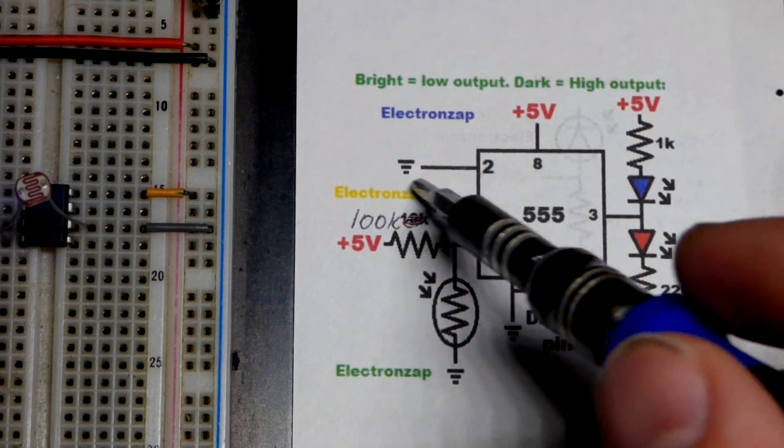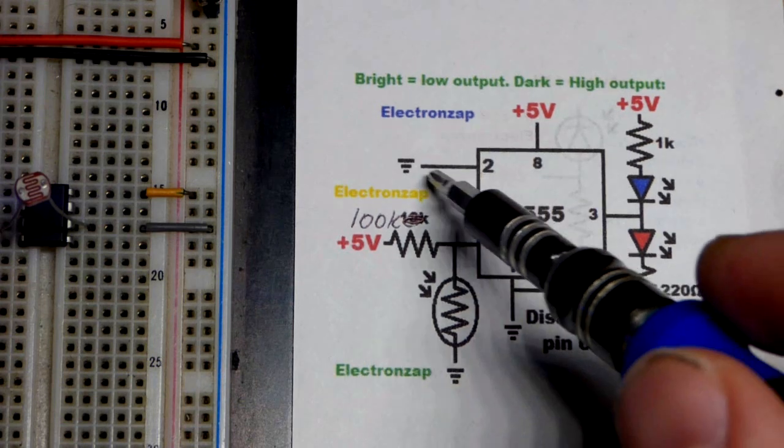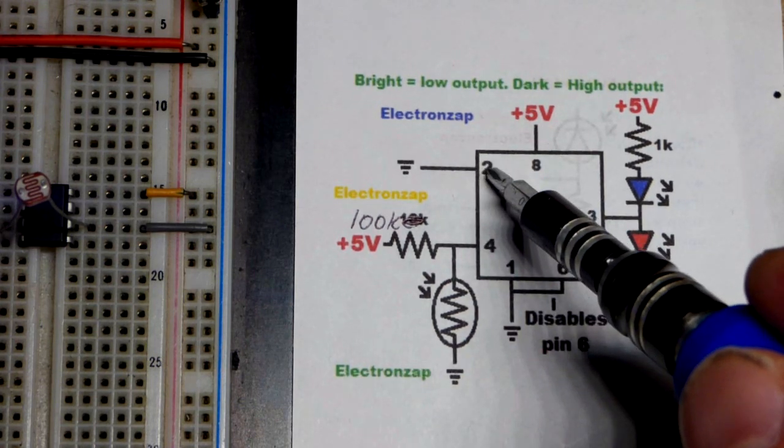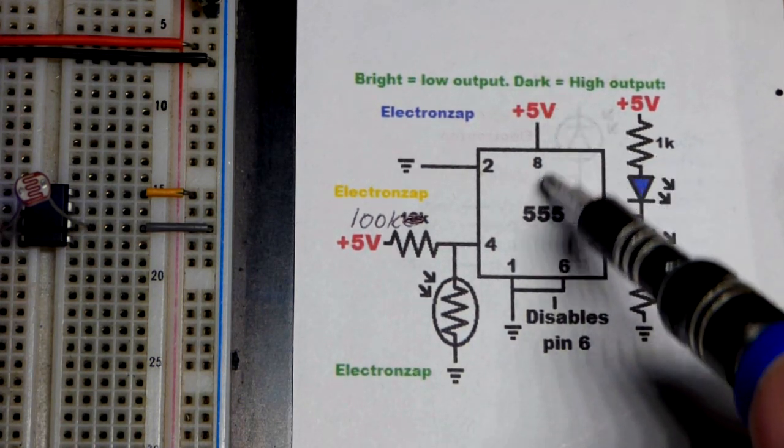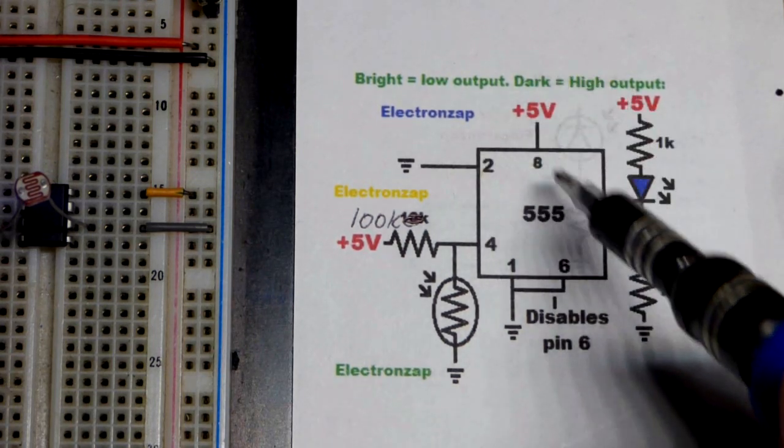Let's do pin 2 first. When you have a low enough input, less than one-third of the supply voltage, then pin 2 (the trigger pin) sets the output high unless something stops it from doing so. But that's what it wants to do.